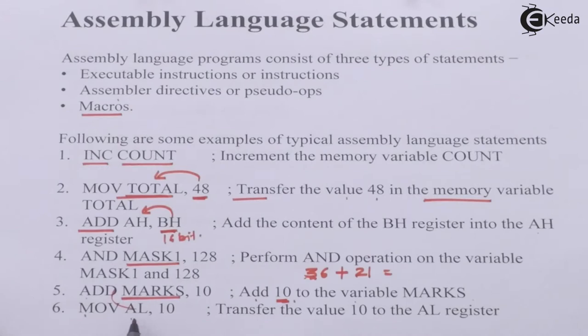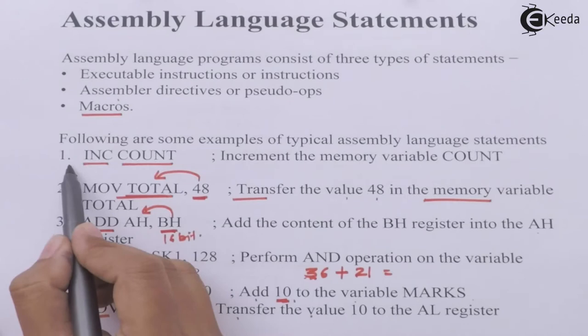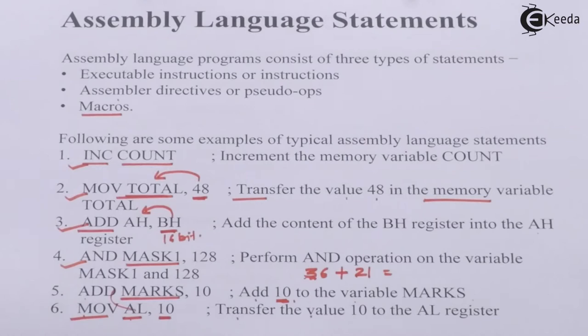'MOV AL, 10' transfers the value 10 to the AL register, so the number 10 gets stored into the memory location AL — this is a move operation. So these are the different types of operations: incrementation, moving, adding, and AND operations. These are the different operations that can be performed by writing an assembly language program.